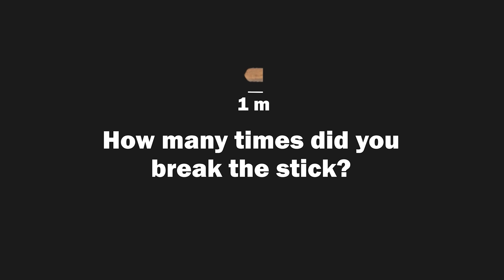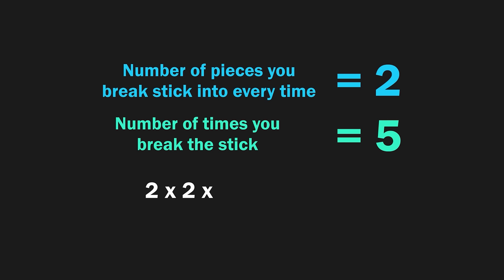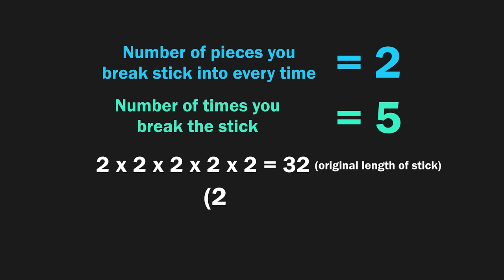If you answered 5, then you are right. Here is an interesting observation about the answer. If you take 2, which is the total number of pieces you break the stick into every time, and if you take 5, which is your final answer, and you multiply 2 to itself 5 times, you get 32, which is the original length of the stick. In other words, 2 to the power 5 is 32.